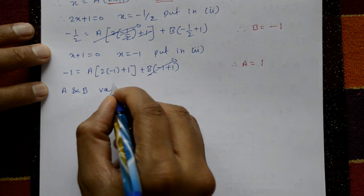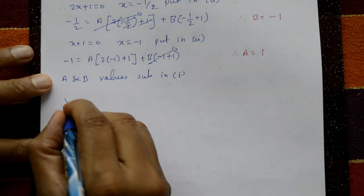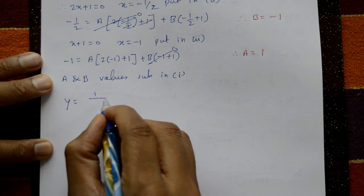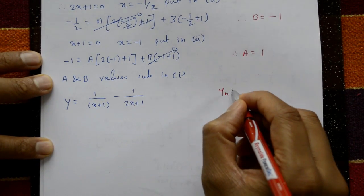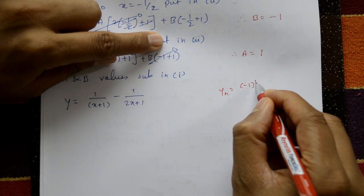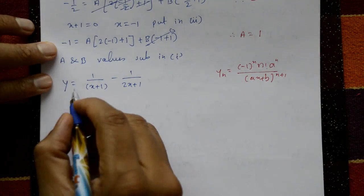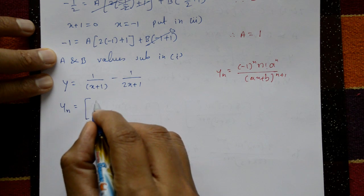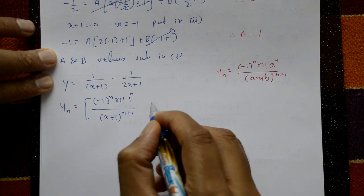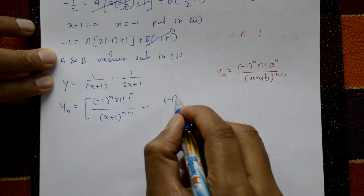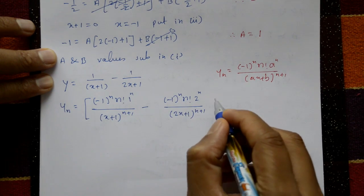Substitute A and B values in equation number 1: y = 1/(x+1) minus 1/(2x+1). Using the standard formula y_n = (-1)^n · n! · a^n / (ax+b)^(n+1), differentiating n times: y_n = (-1)^n · n! · 1^n / (x+1)^(n+1) minus (-1)^n · n! · 2^n / (2x+1)^(n+1). This is the required solution.